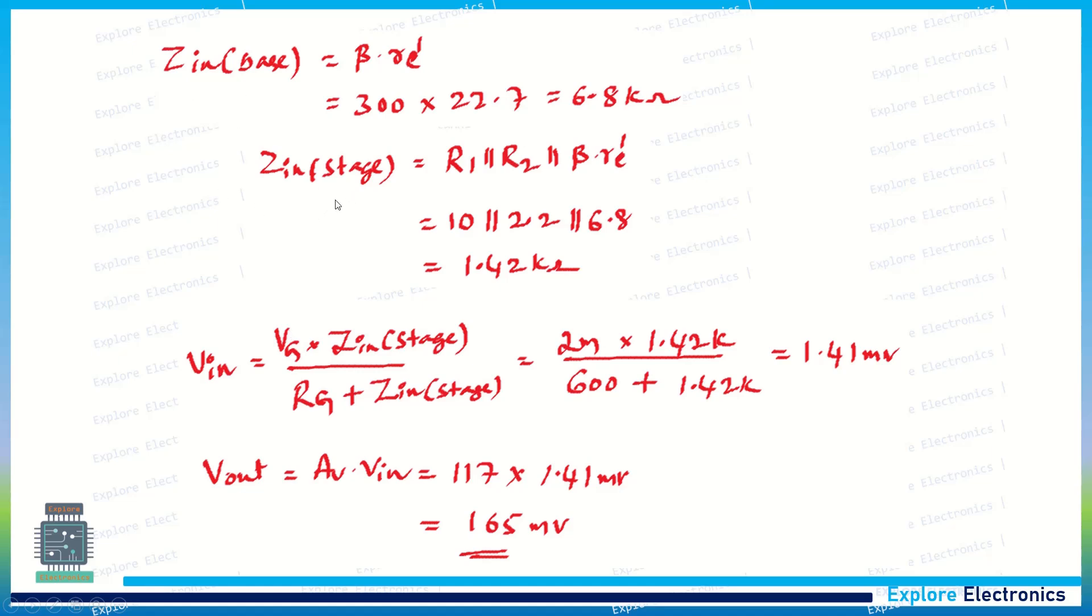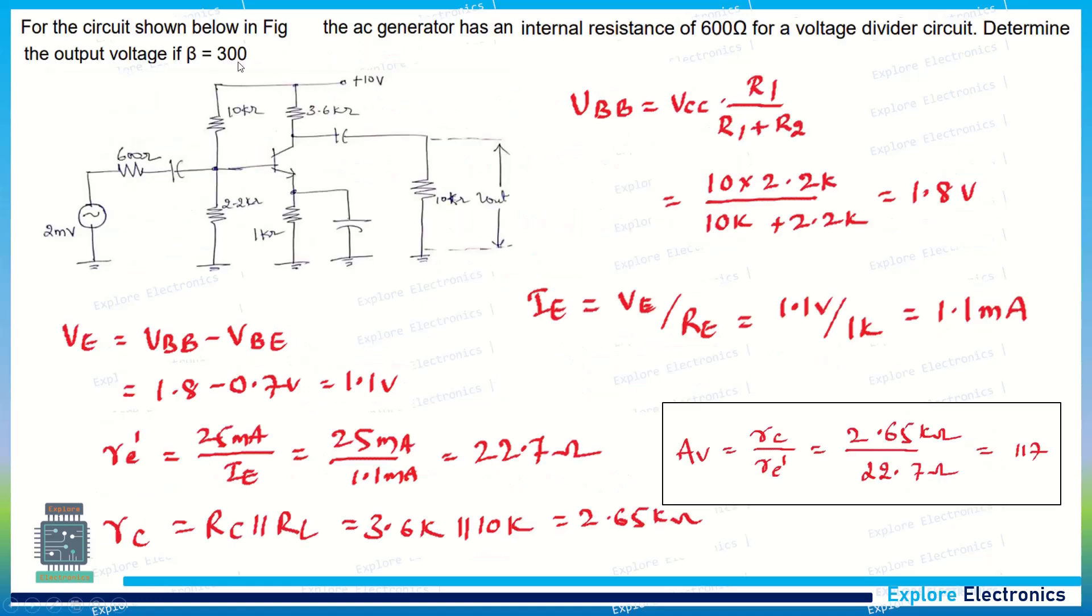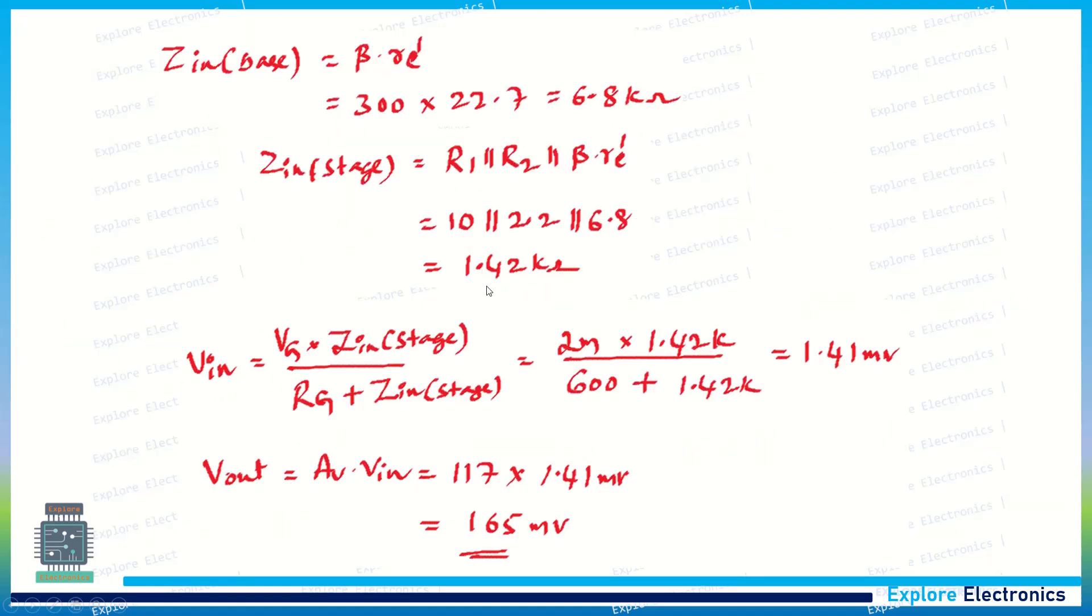To get that, calculate Zin(base) as well as Zin(stage). The input impedance of the stage will be R1 parallel R2 into beta into re'. Beta is given in the problem as 300.